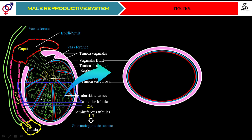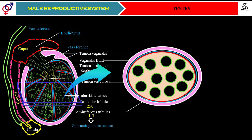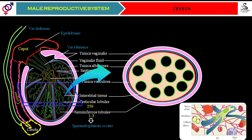Inside the tunica vasculosa we find many seminiferous tubules. In this cross-sectional view, the circular structures you observe are nothing but the seminiferous tubules, because we have cut the section in this way. Between these seminiferous tubules there is a specialized tissue — that specialized tissue is called interstitial tissue.